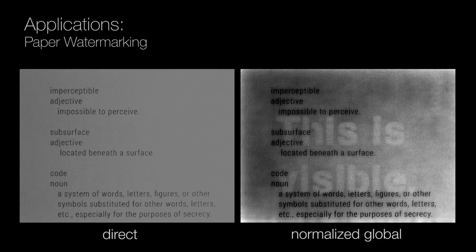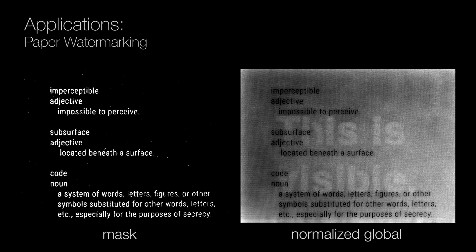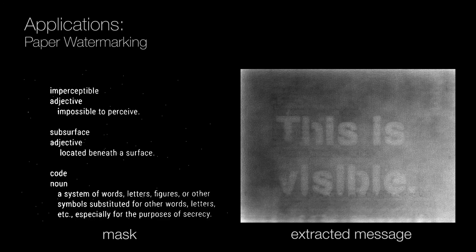This is the separated direct and normalized global component. We use the direct component to create a binary mask for the text, and a standard inpainting algorithm to remove the overlaying text. This gives us the clean embedded text. Thank you.